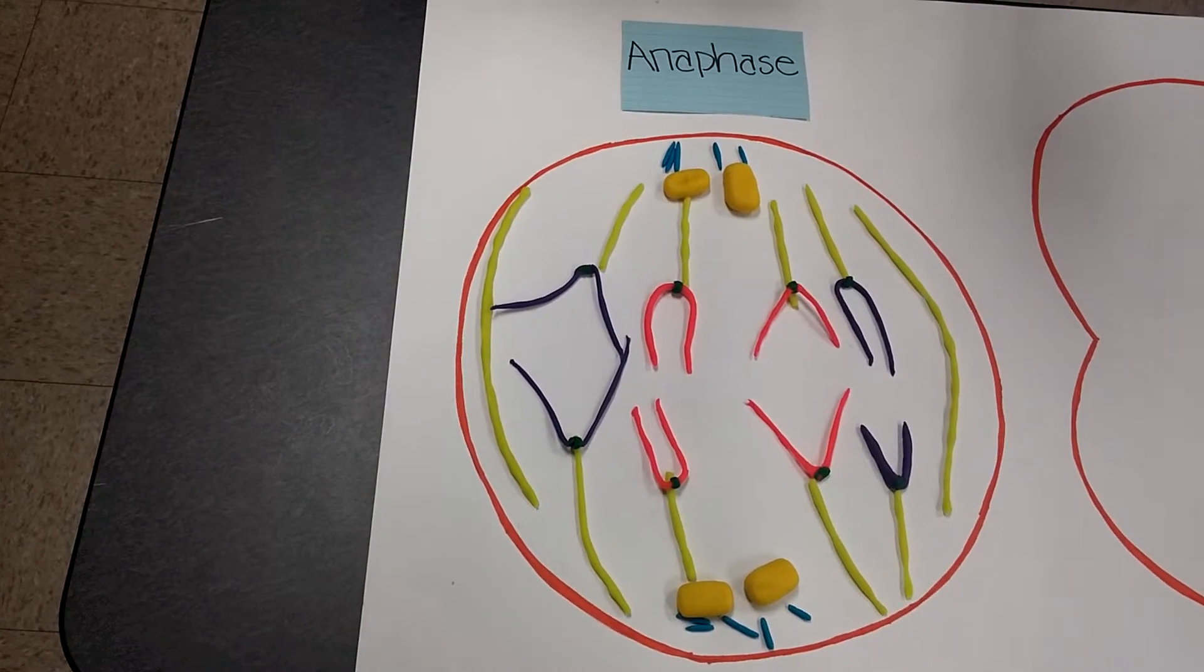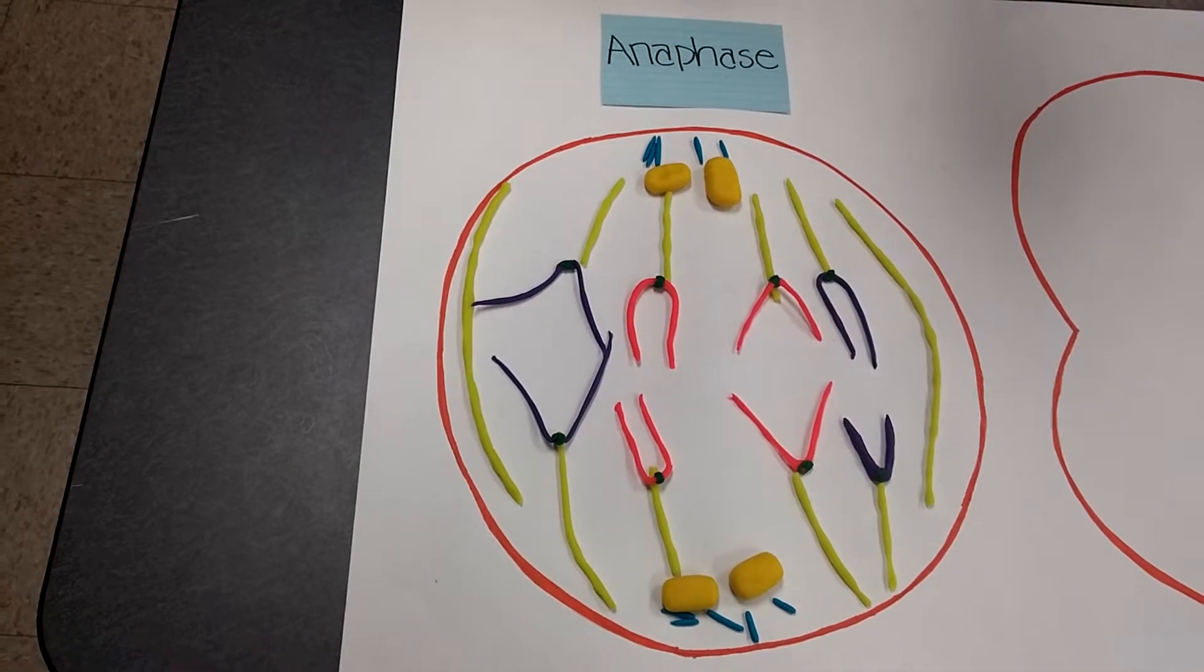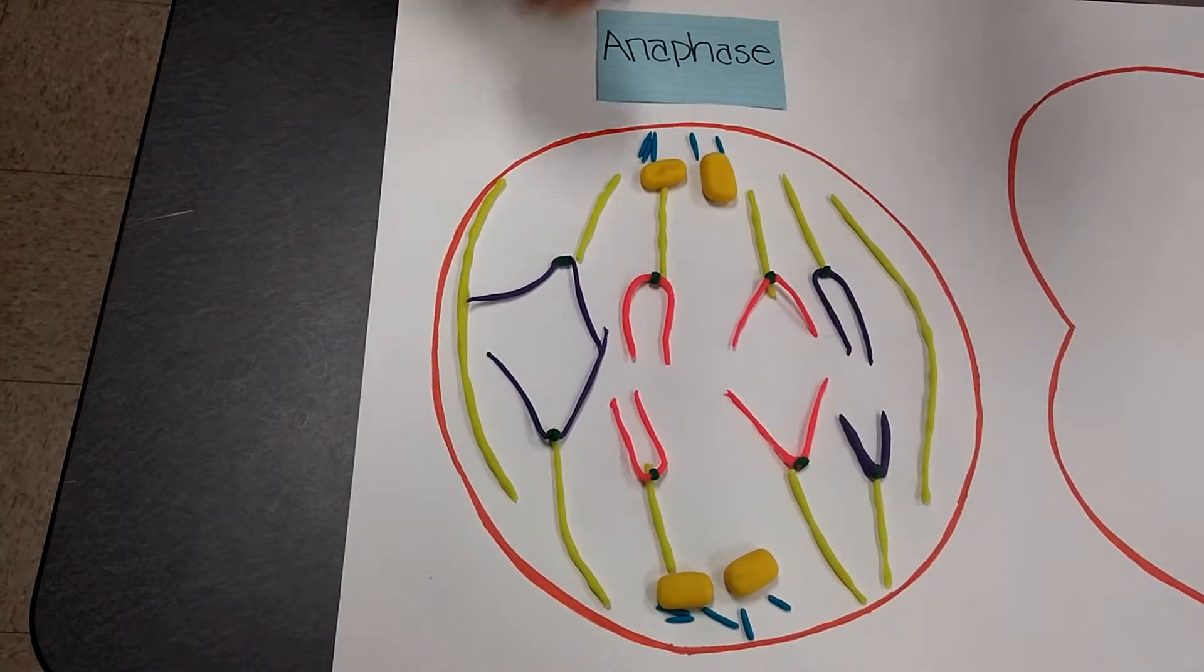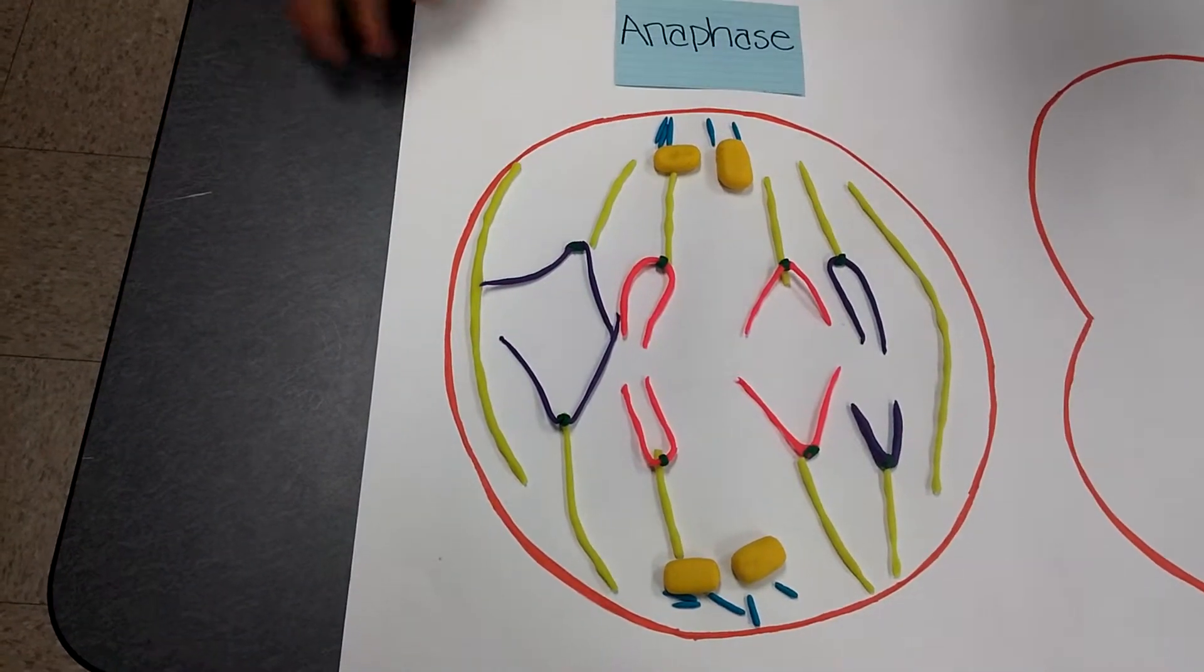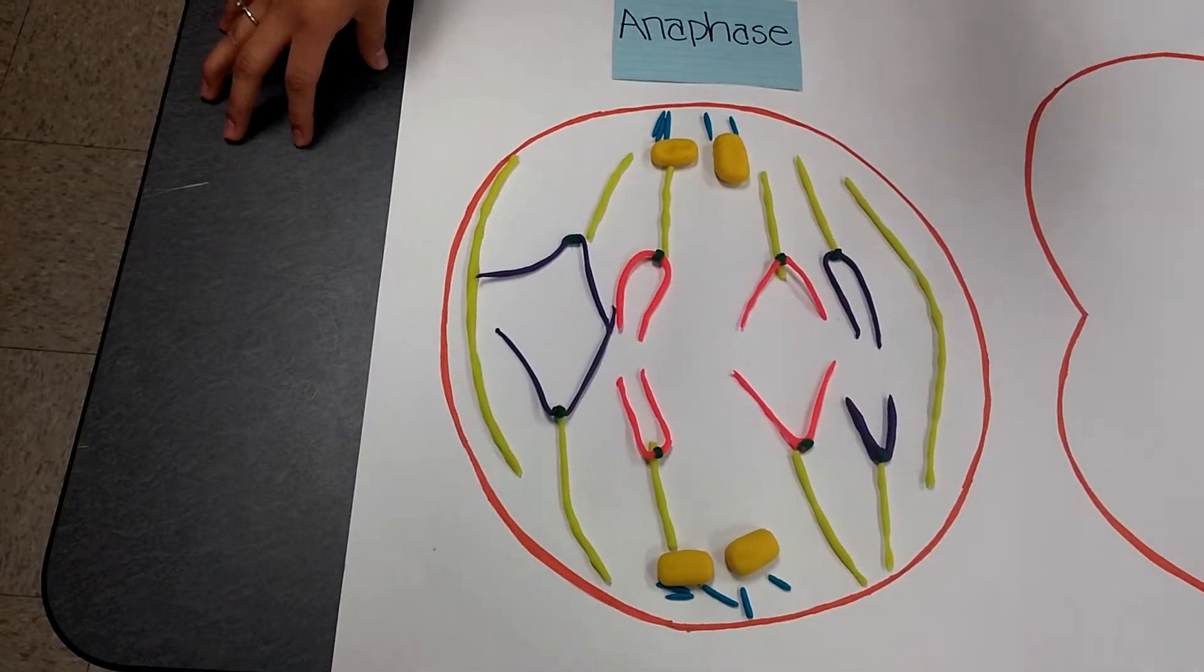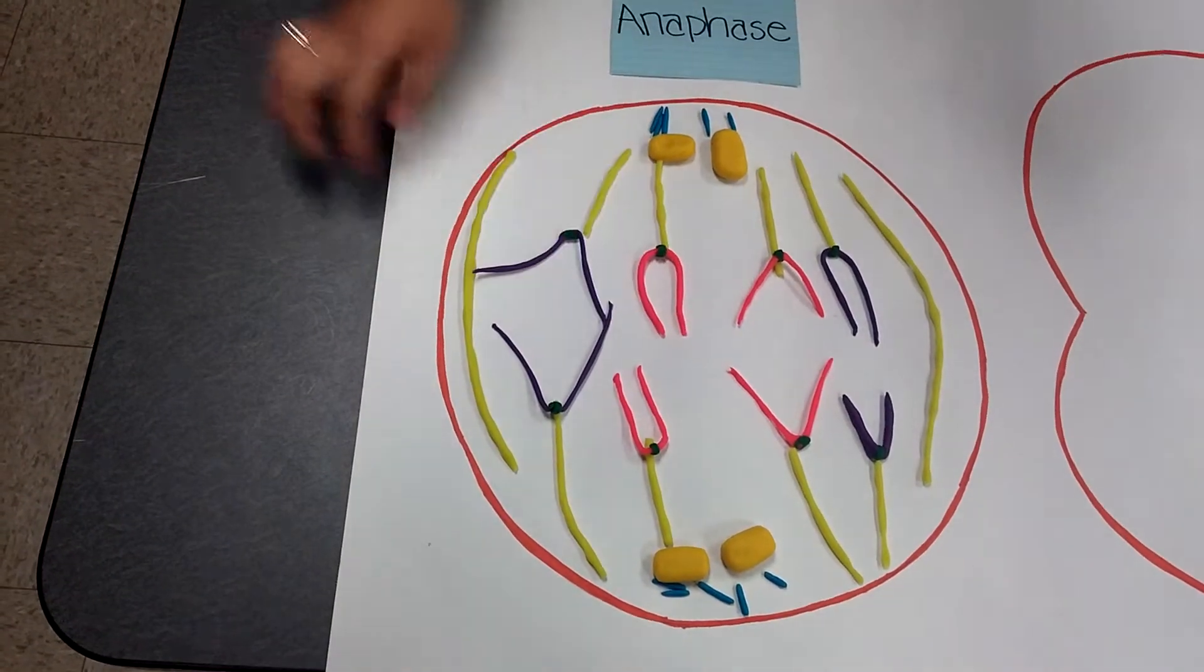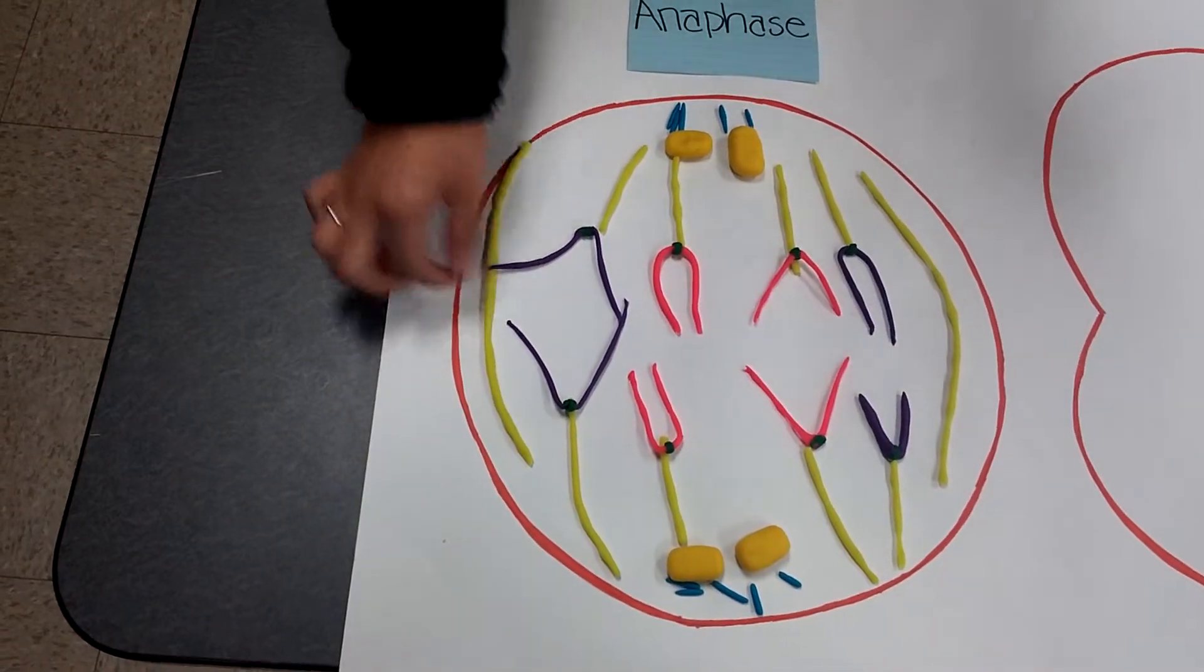We are now in anaphase. This phase starts at the center of the cell. The microtubules begin to pull the sister chromatids apart to opposite poles. Once they are apart, the sister chromatids become chromosomes. At the same time, polar microtubules push on each other.